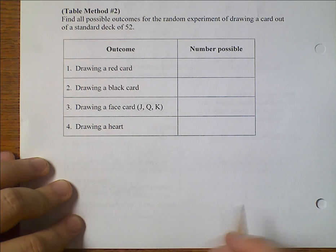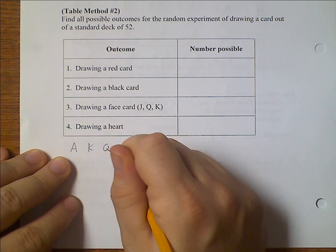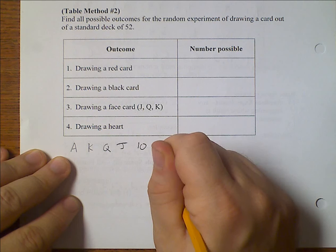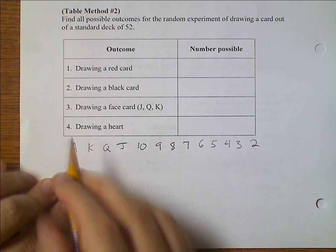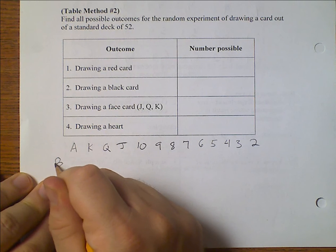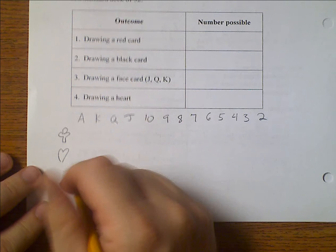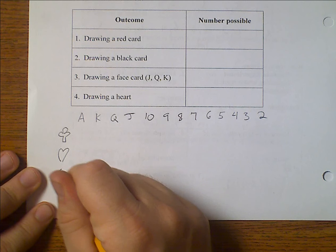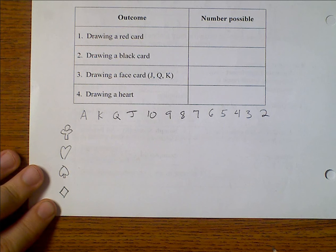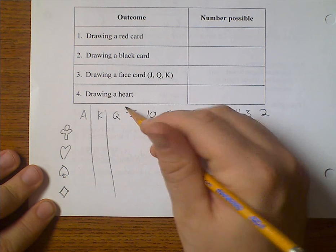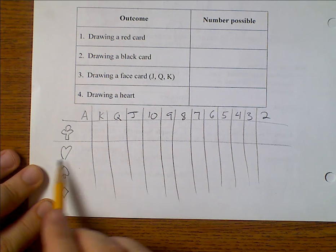Of my cards, we have ace, king, queen, jack, 10, 9, 8, 7, 6, 5, 4, 3, and 2. And we have them for clubs, we have them for hearts, we have them for spades, and we have them for diamonds.